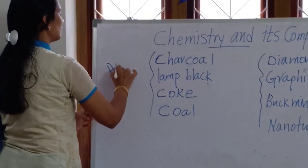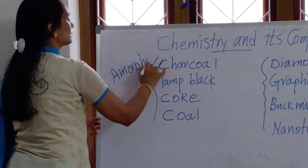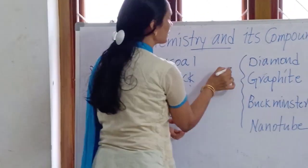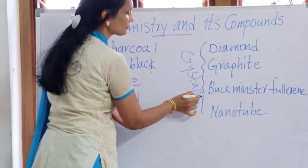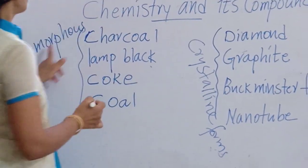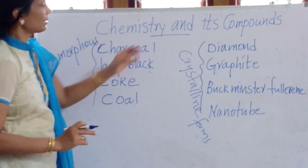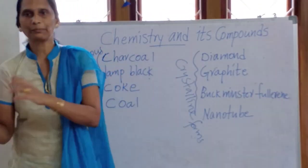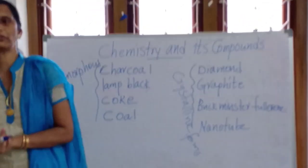We call the non-crystalline forms amorphous forms. Amorphous means non-crystalline, and the others are the crystalline forms. So carbon itself is divided into crystalline forms as well as amorphous forms.